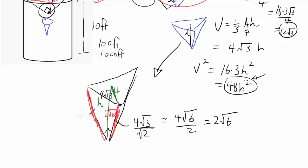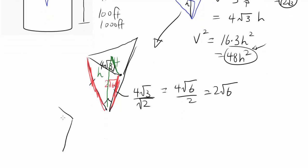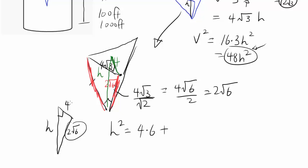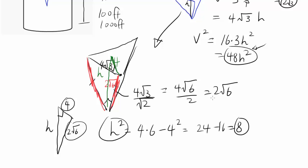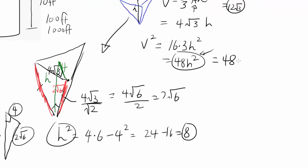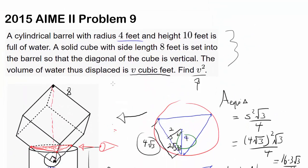We have a right triangle with hypotenuse 2√6 and one leg of 4. So h² = (2√6)² − 4² = 24 − 16 = 8. Therefore V² = 48 × 8 = 384. That's our answer for 2015 AMC 10/12 problem number 9.